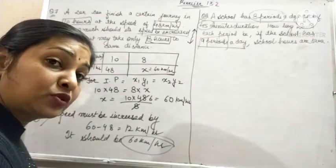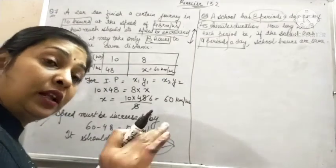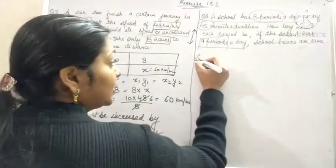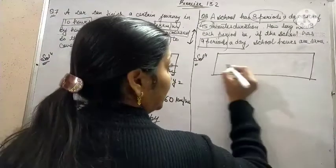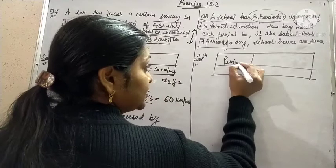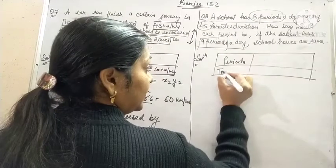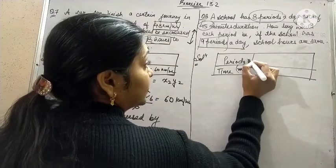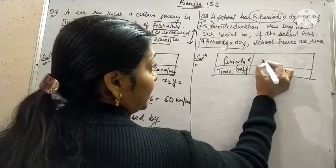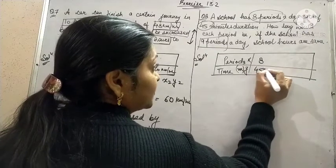Again, number of periods increases, so the duration of the period will decrease. Formulate the table. Periods and duration or time, whatsoever you want to write. Take periods as X, take duration as Y. 8 periods, time was 45. 9 periods, time was X.